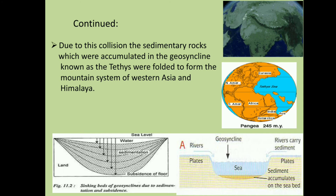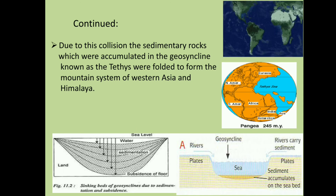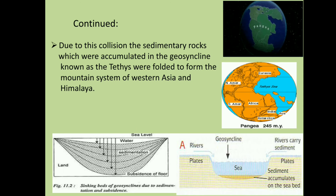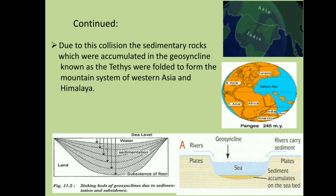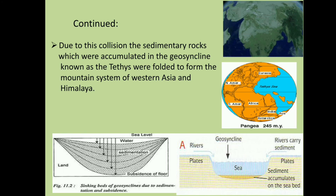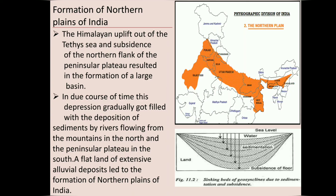A geosyncline is the linear trough of subsidence of the Earth's crust within which vast amounts of sediment got accumulated. The filling of a geosyncline with thousands or tens of thousands of feet of sediments was accompanied in the last stages of deposition by folding, crumpling and folding of the deposits.